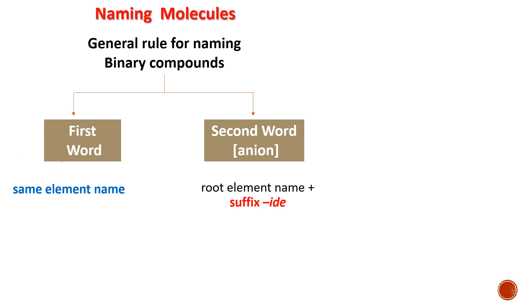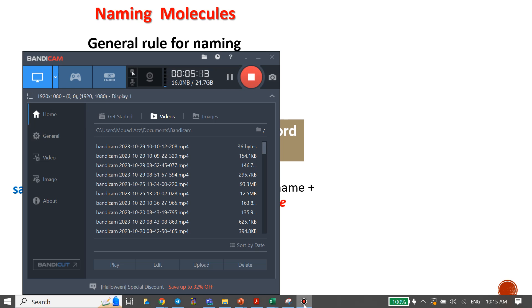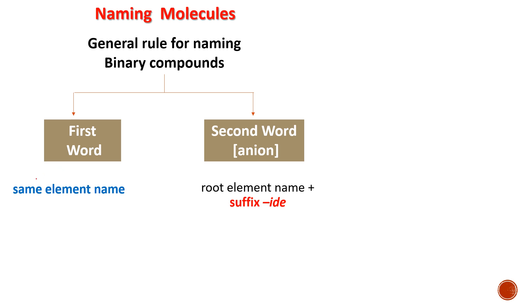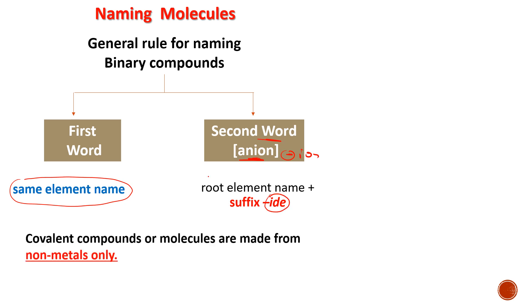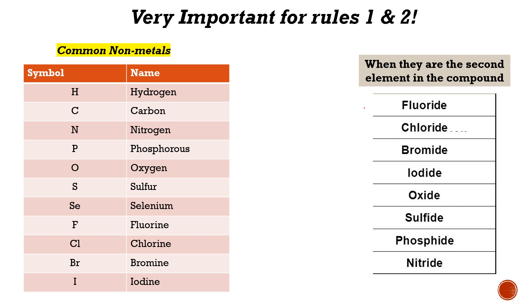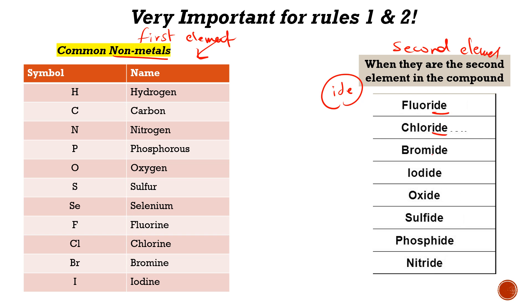So again, the general rules: write the name of the first element with no changes, and the second word is like writing the anion — we put -IDE at the end of the name. Remember that covalent compounds are made from non-metals only. These are the names used: for the first element as-is, and for the second element with the -IDE ending.